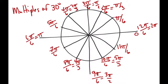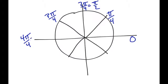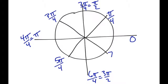So if you can't remember all the radian measures of the multiples of 30 around the unit circle, this is an easier way of going about it — all you have to do is reduce the fractions. Now let's talk about the multiples of 45. We start at 0 radians, and the first one is pi over 4. 45 degrees is every pi over 4. So the next one is 2 pi over 4, then 3 pi over 4, then 4 pi over 4, then 5 pi over 4, then 6 pi over 4, then 7 pi over 4, and 8 pi over 4.